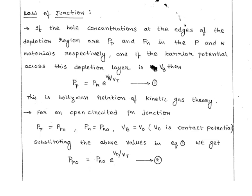If hole concentrations at the junction of the depletion layer are pp and pn for p-type and n-type materials respectively, and if the barrier potential across the depletion layer is Vb, then according to Boltzmann's relation of kinetic gas theory: pp equals pn into e power (Vb / Vt), where pp is holes in the p-region and pn is holes in the n-region.